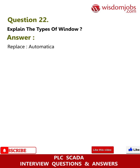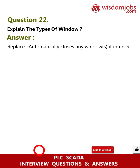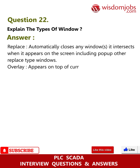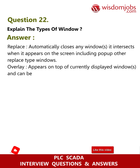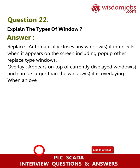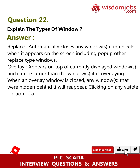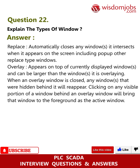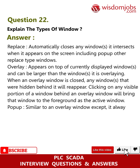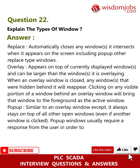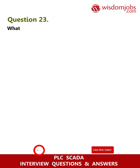Question 22: Explain the types of windows. Answer: Replace — automatically closes any windows it intersects when it appears on the screen, including pop-up and other replace-type windows. Overlay — appears on top of currently displayed windows and can be larger than the windows it is overlaying; when an overlay window is closed, any windows hidden behind it will reappear; clicking on any visible portion of a window behind an overlay will bring that window to the foreground. Pop-up — similar to an overlay window except it always stays on top of all other open windows even if another window is clicked; pop-up windows usually require a response from the user in order to be removed.